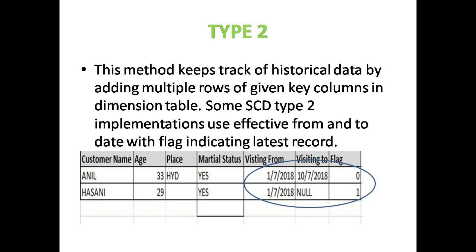This is Type 1. Type 2 keeps track of historical data by adding multiple rows for given key columns in the dimension table. Some Slowly Changing Dimension Type 2 implementations use effective from and to dates, with a flag indicating the latest record.